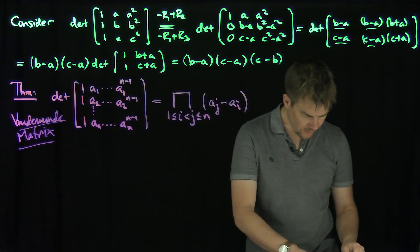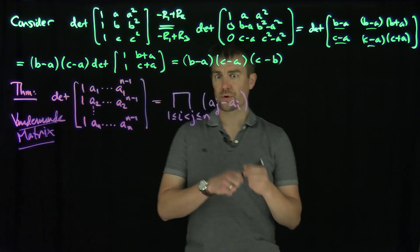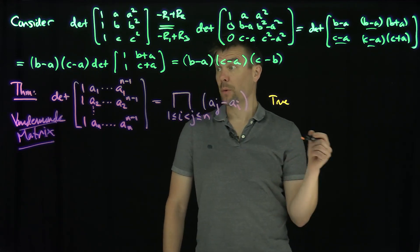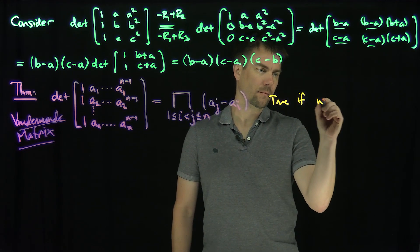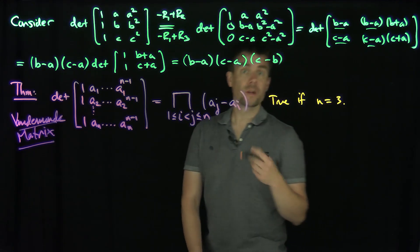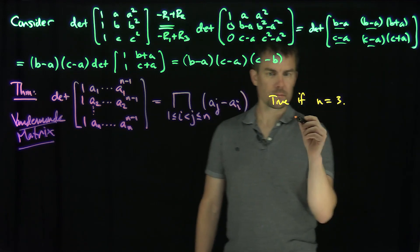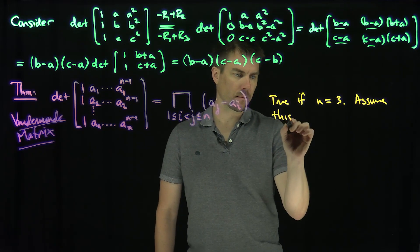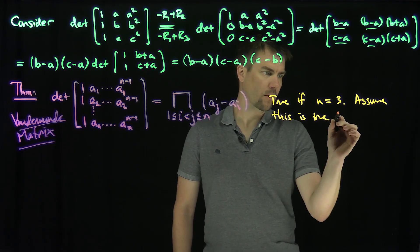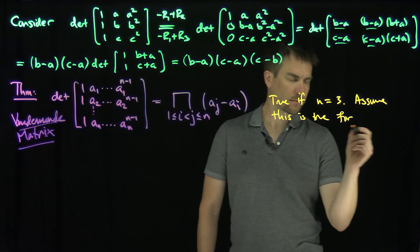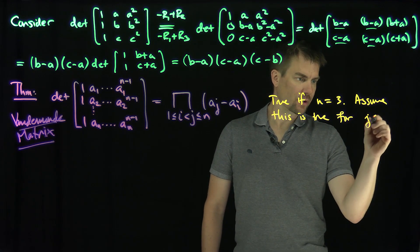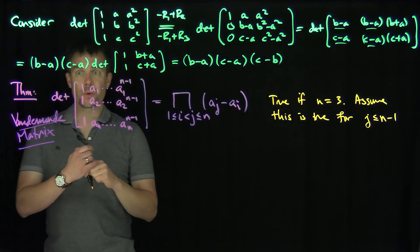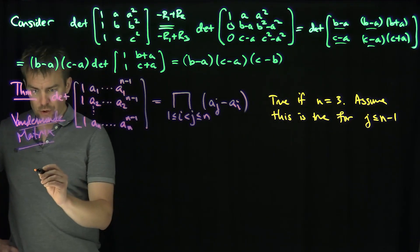Let's see how we prove this. This theorem is true for n equals 3, for example. We're going to prove this by induction. Assume it is true for all sizes strictly less than or equal to n minus 1. We'll try to prove it's true for n. To do so, we'll introduce an auxiliary function.